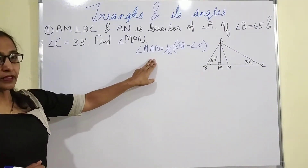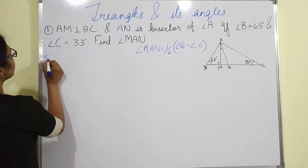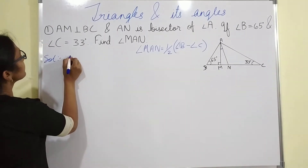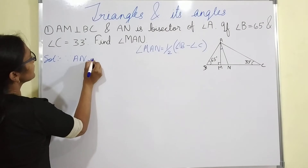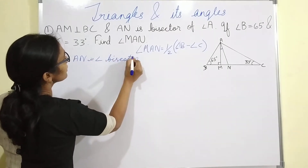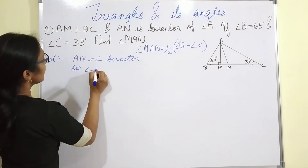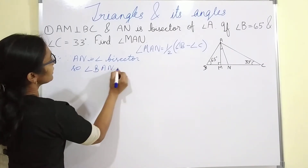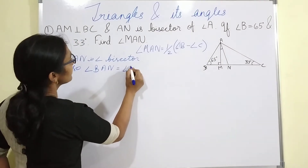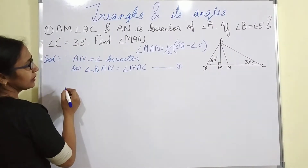First I am proving this theorem, then I will solve the question. Since AN is the angle bisector, angle BAN equals angle NAC. This is equation 1.